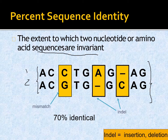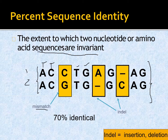In percent sequence identity, we count the number of similar and dissimilar sequences, as well as gap sequences. A similar position is called a match, a dissimilar one is called a mismatch, and we also count the gaps. For example: this is a match, this is a mismatch, this is a match, this is a gap — I'll explain how to calculate all of these in the coming slides.